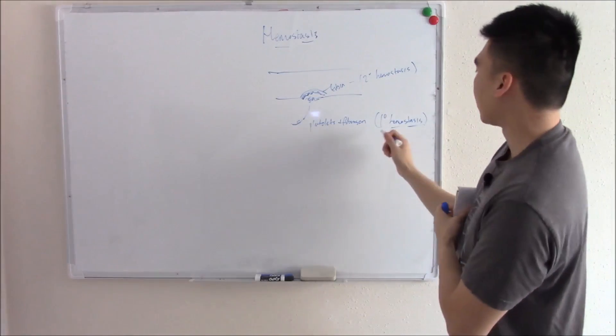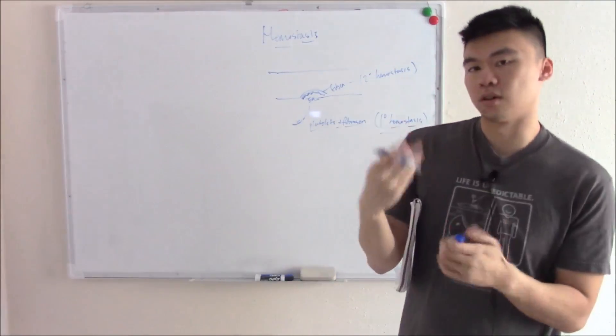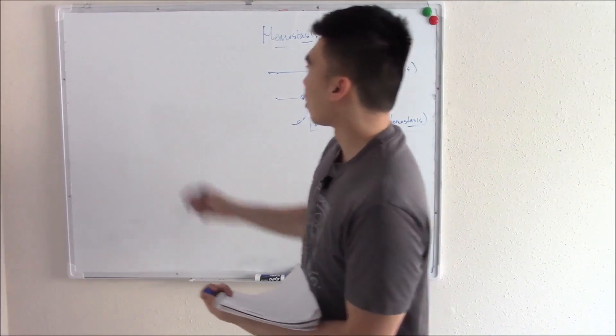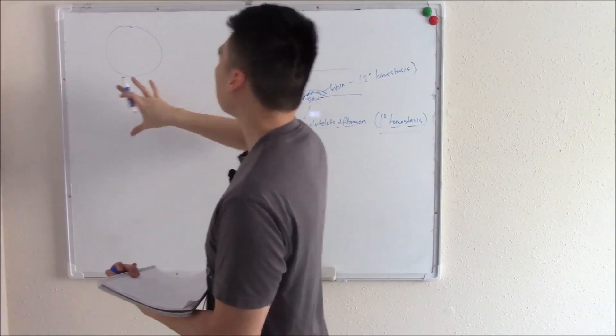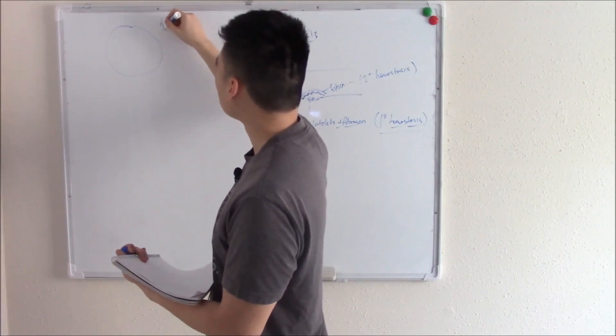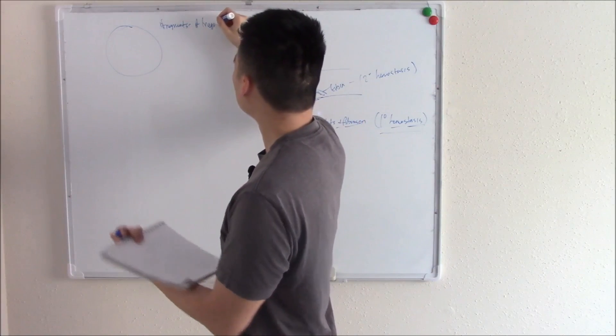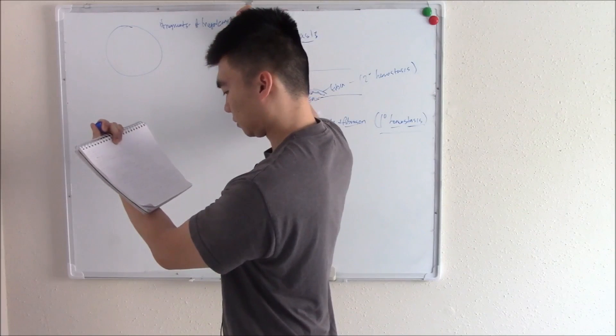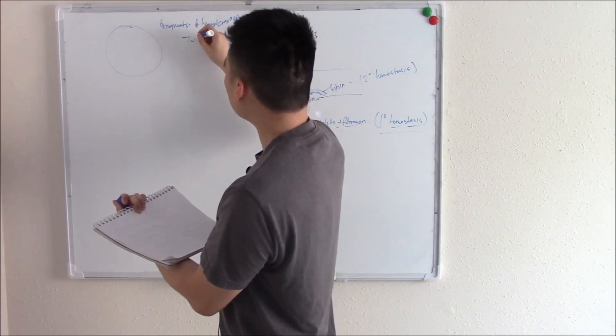In this video, we're going to talk about primary hemostasis first, platelets and the fibrinogen that drapes over it. Let's recap what platelets are. Platelets are just fragments of megakaryocytes, and they have a lifespan of about a week, seven to ten days.